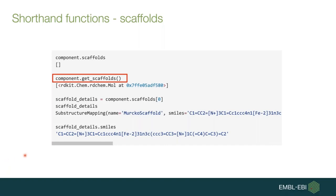One such shorthand function can be used for retrieving scaffolds. First, if you create the component and access the scaffolds property you won't find anything, but if you call the get_scaffolds method you will get an array of scaffolds retrieved for that chemical component. You can then access the scaffolds property to get a greater level of detail, such as the SMILES representation and atom-level mapping for the scaffolds.